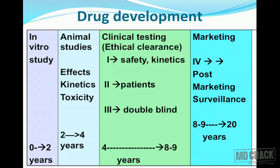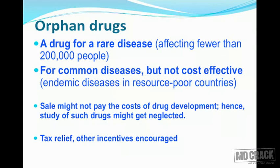A slide on drug development shows approximately how much time is consumed in the whole process. In-vitro studies take 0 to 2 years. Animal in-vivo studies — to know effects, kinetics, and toxicity — take another 2 years (years 2 to 4). Clinical testing (phases 1, 2, and 3), which requires ethical clearance, takes from year 4 to year 8 or 9 — another 4 to 5 years. Post-marketing surveillance (phase 4) may last another 10 years. Overall, knowing everything about a drug could take approximately 20 years.